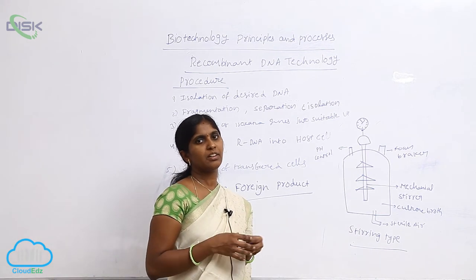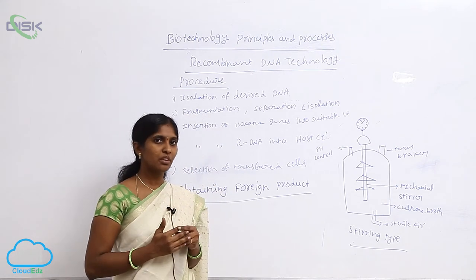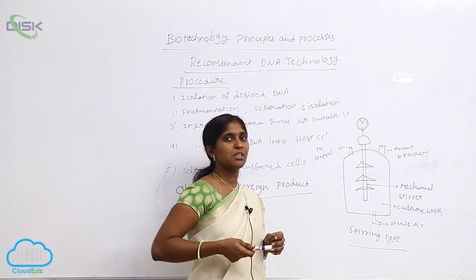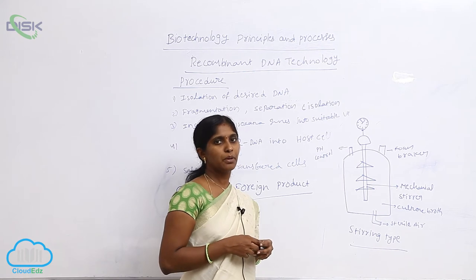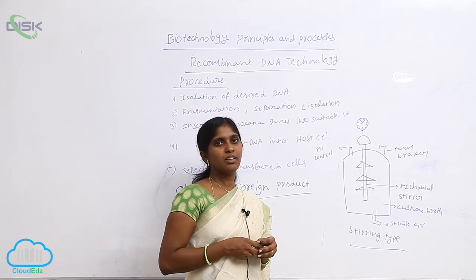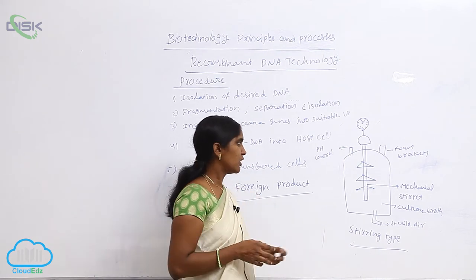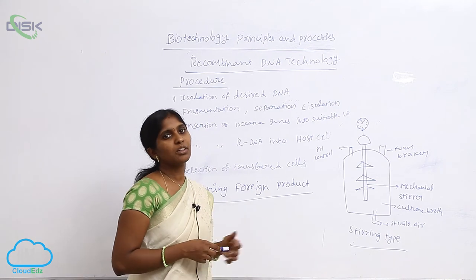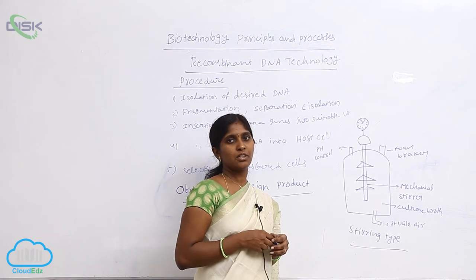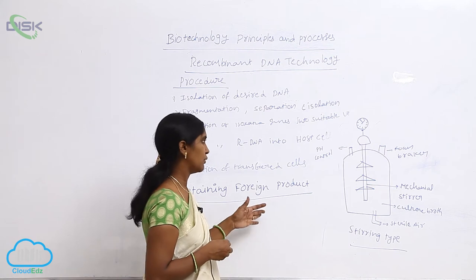The bioreactors are the fermentation reactors where the processes are going on. Generally, for biotechnological commercial-scale production, the stirring type of bioreactors are used. The capacity of the bioreactors is 100 liters to 1000 liters. Here, controlled conditions and also sterile conditions are provided for the production of foreign proteins or foreign products.